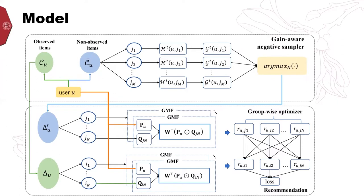For improving the training efficiency, the group-wise optimizer constructs positive and negative groups for each user in each iteration and optimizes them in a cross manner.